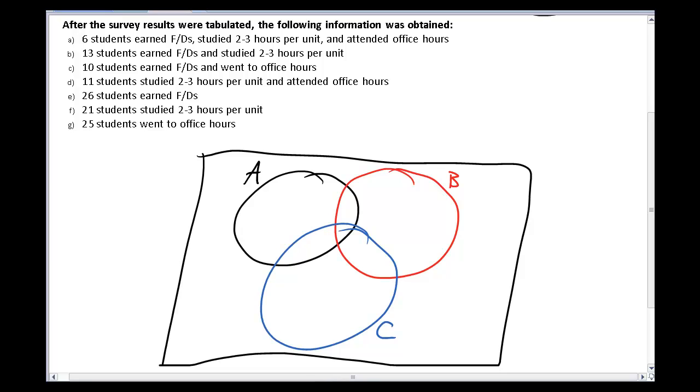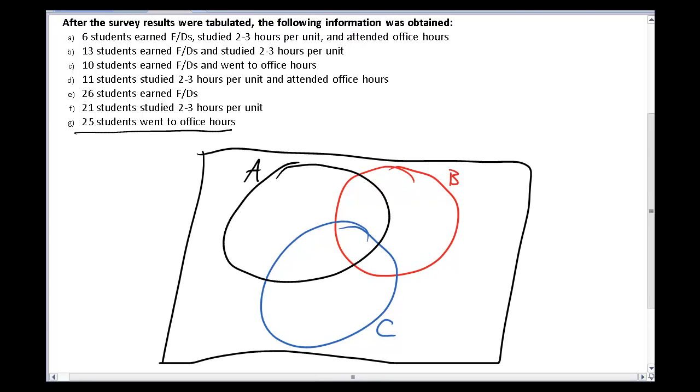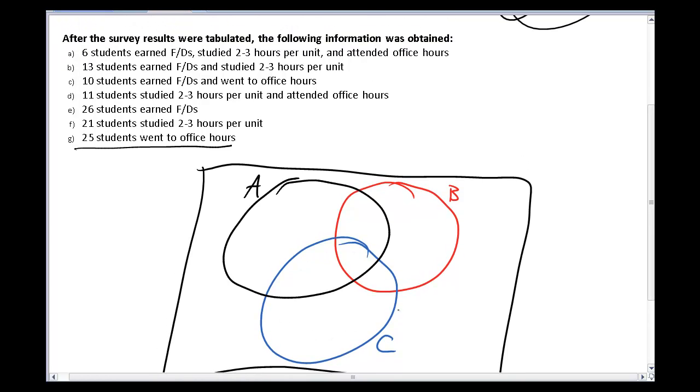Now that we've got this, I want to fill in the three regions of my graph as best as possible and see who lives in what areas. We know from down here that in terms of people going to office hours, which we called C, there's 25 people in this whole C region. But you don't start there. Because of the 25 total people who are in the C area, some of them fit into each of these four different spots that C's split up into. So here's what you do. You start off with the thing that describes the most specific information. Six students earned F and Ds, studied 2-3 hours per unit, and attended office hours. That means this region right here, common to all three of these questions getting a yes answered, I had six people.